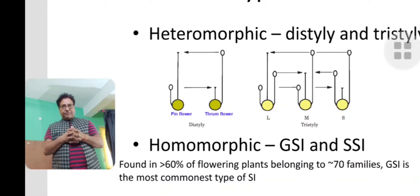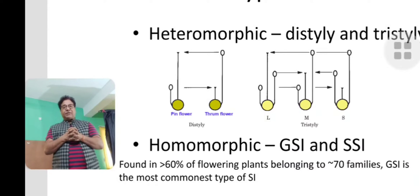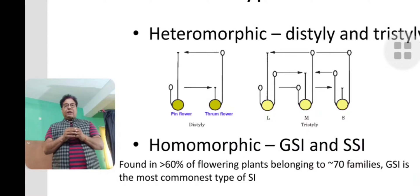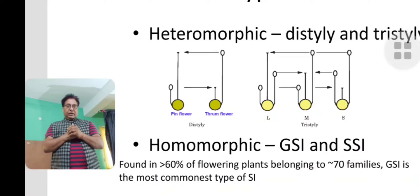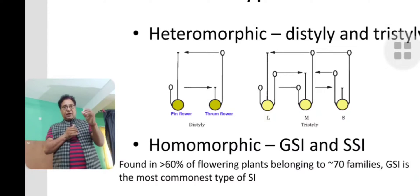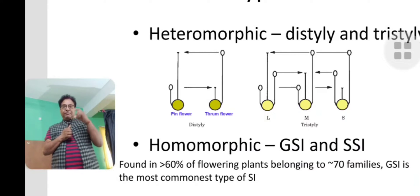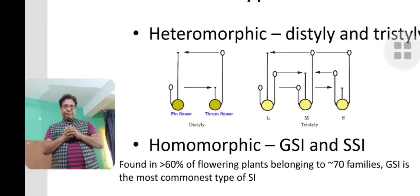In case of heteromorphic self-incompatibility, the length of the pistil is different. We find two conditions — distyly and tristyly — and fertilization occurs only by pollen coming from the anther at the same level. In the thrum flower the pistil is shorter and the anther sits above the stigma, while in the pin flower the pistil is longer. When pollen is dehisced it can fall on the stigma by gravity, but it does not fertilize it.